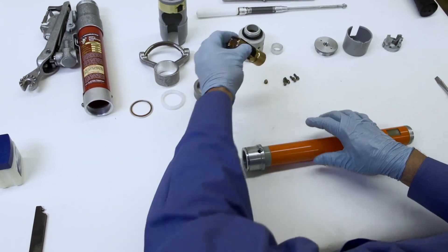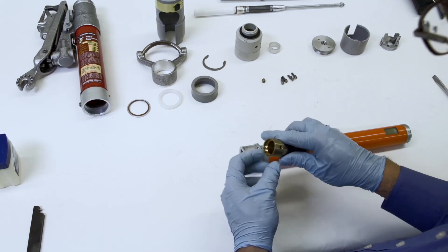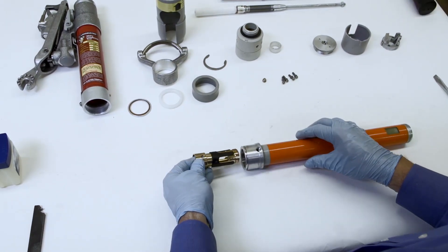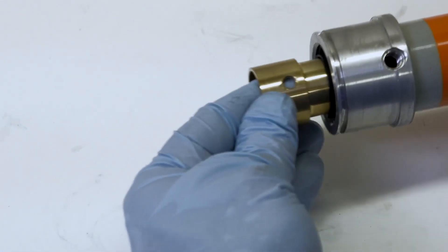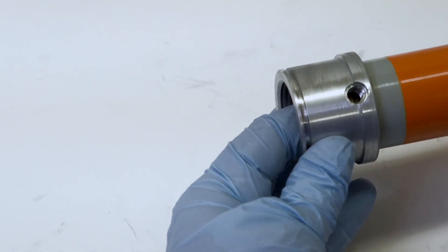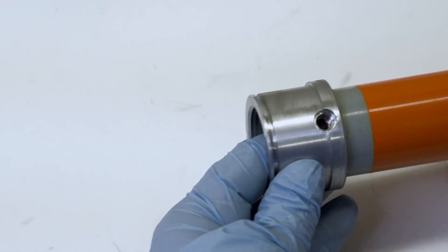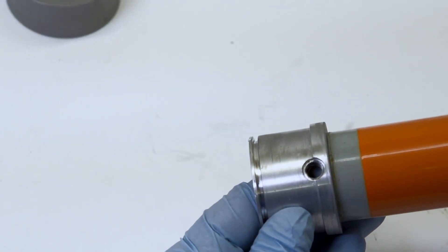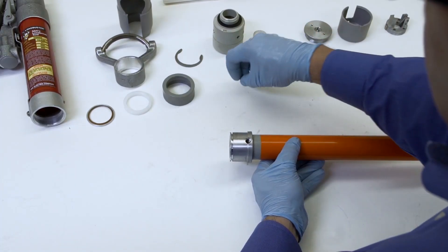To reassemble the Loadbuster Load Break Tool, first insert the stationary contact into the inner tube assembly, lining up the hole in the stationary contact with the inner tube assembly's tapped hole. Use a 5-32 inch Allen key to install a new socket head set screw.